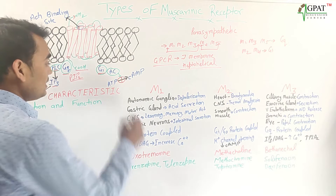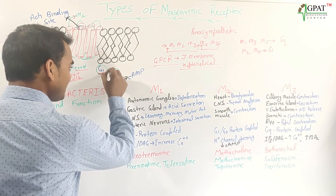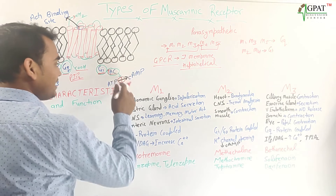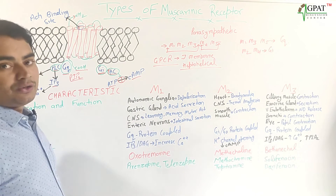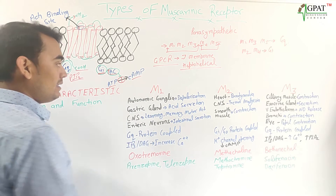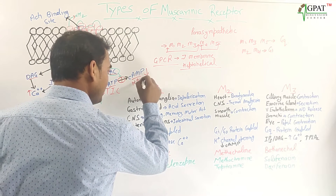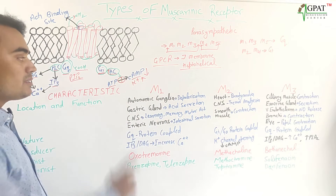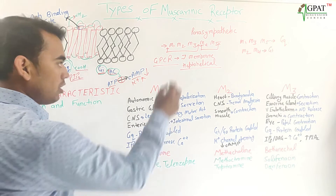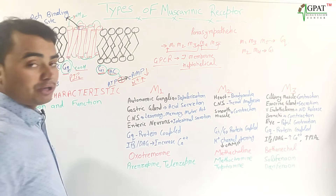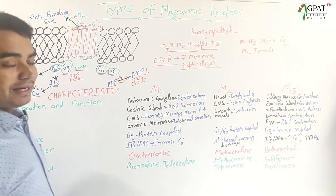For the inhibitory pathway — even-numbered M2 and M4 — Gi coupling is activated. This Gi inhibits adenylyl cyclase, which in turn inhibits conversion of ATP into cyclic AMP (cAMP), so cAMP concentration decreases. Additionally, potassium ion channels open, increasing potassium ions, which carries out hyperpolarization. So even-numbered receptors work through potassium ions, while odd-numbered receptors work through calcium ions.